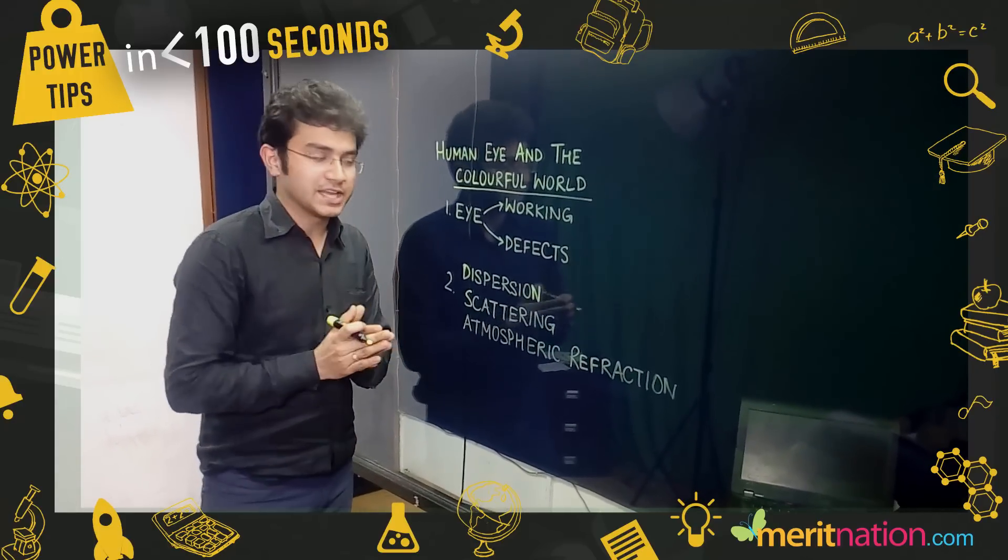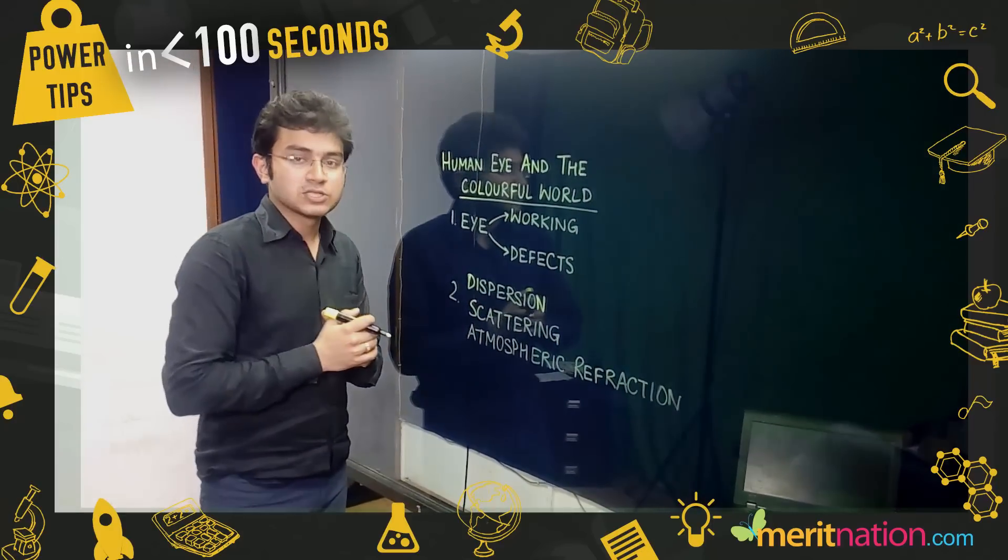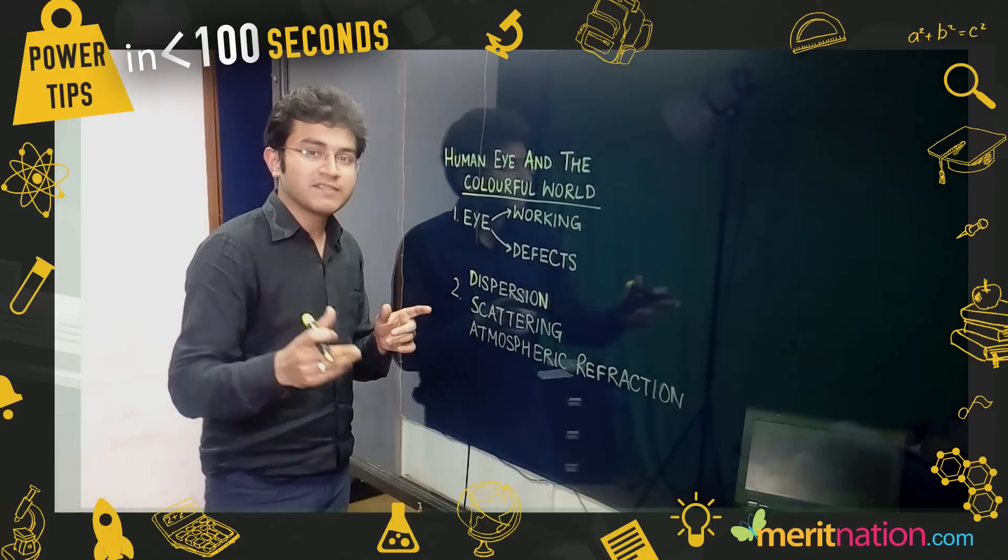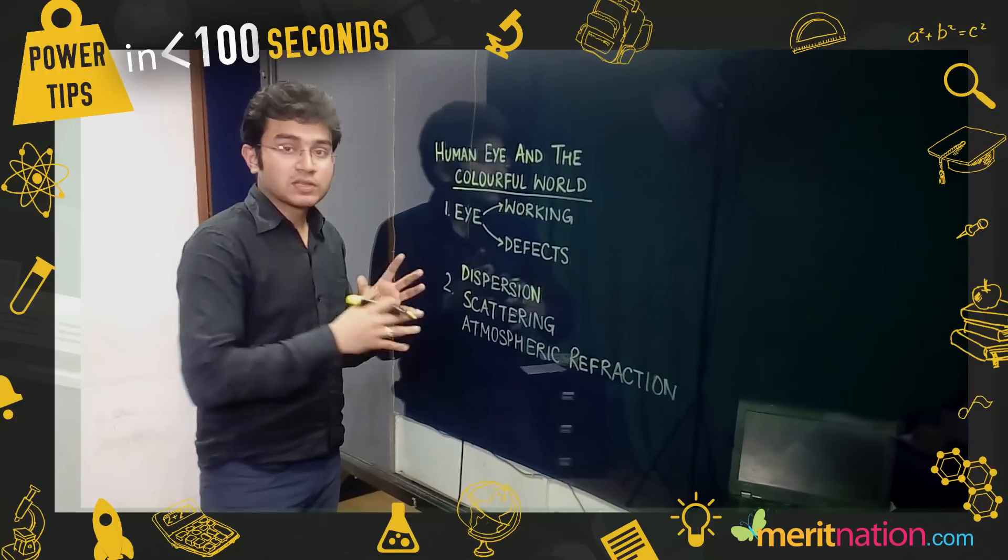The cause of presbyopia is old age. Remember the type of lenses that are used to cure these defects. In case of myopia, use concave lens, and convex in the other.